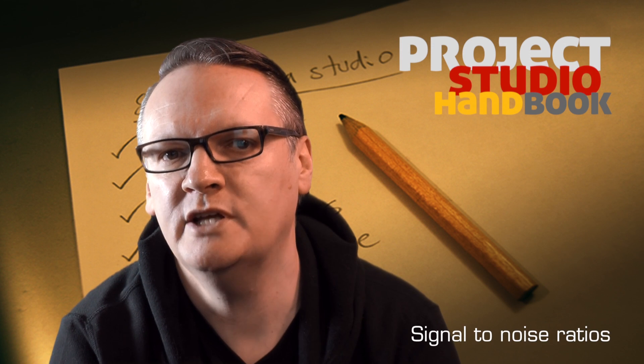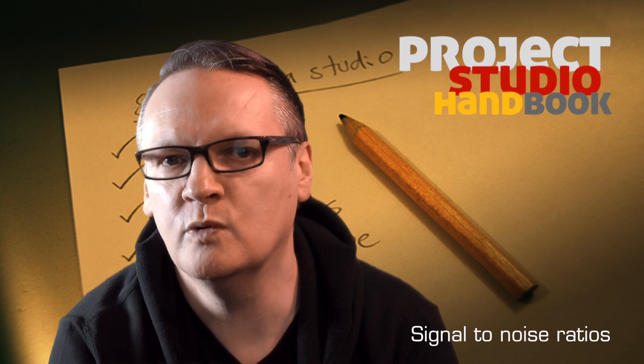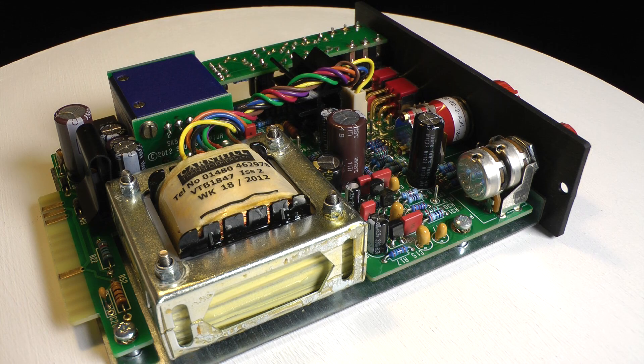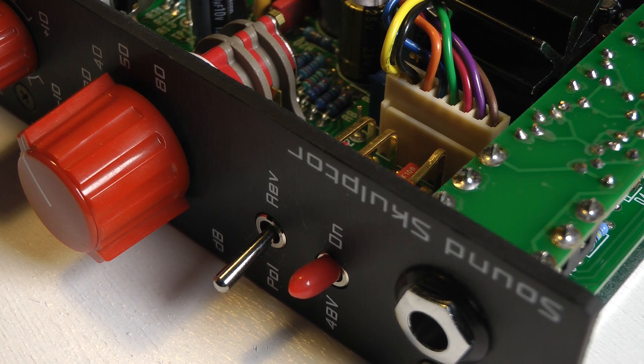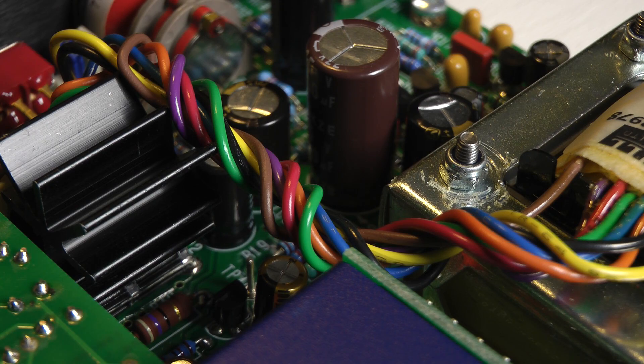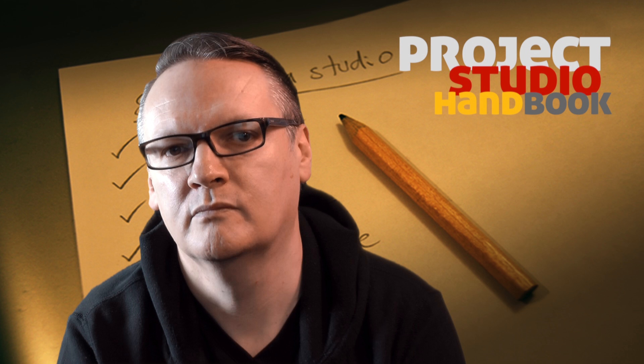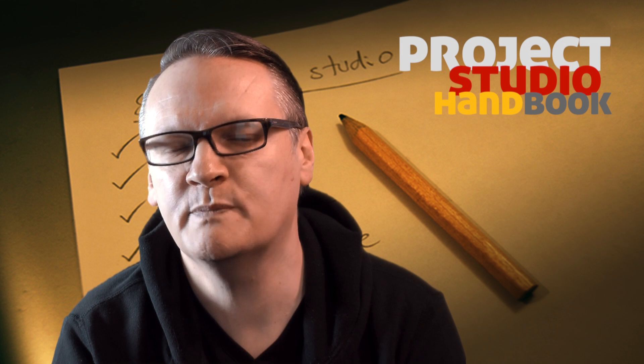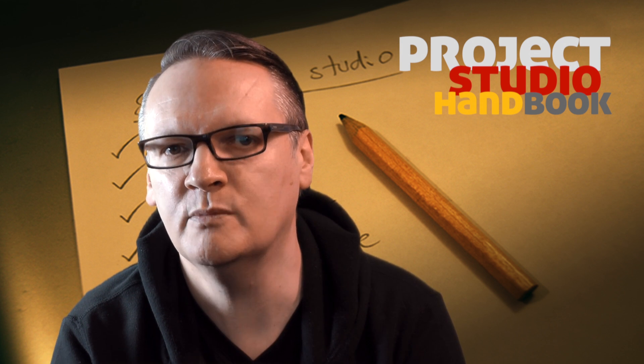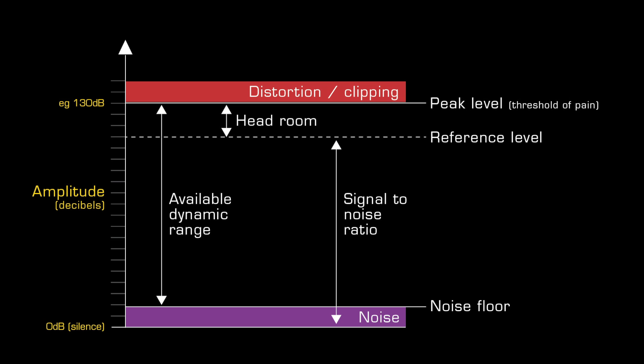The relationship between the unwanted noise and the wanted signal, or dynamic range, can be expressed as the signal-to-noise ratio. For audio equipment, the noise floor will be the unwanted noise produced by the electronics. Signal-to-noise ratios are usually calculated from the noise floor level and the reference level, and are one of the specifications used to help determine the quality of audio equipment. A high signal-to-noise ratio is almost always desirable because it means the noise is quiet and the dynamic range is wide.